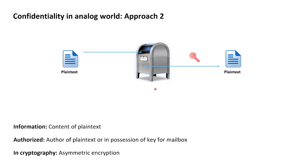However, mailboxes also have a limitation: they can only accept small plaintext. Looking at this drawing, you can think of this as the mailbox only accepting letters and postcards, but not bigger boxes. This is a new limitation. Please pause and try to think of an approach in the analog world that doesn't suffer from the limitation of the safe approach and also doesn't suffer from the limitation of the mailbox approach. As a hint, try to think of an approach that combines both approaches we have now seen.